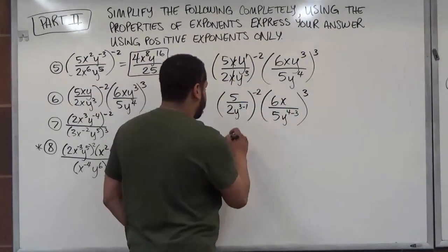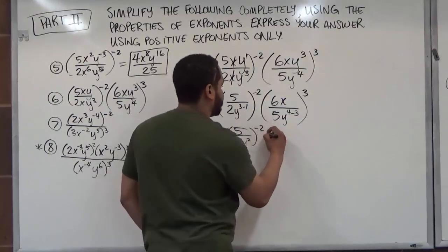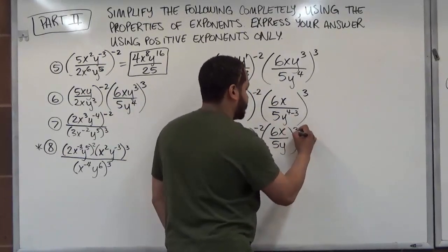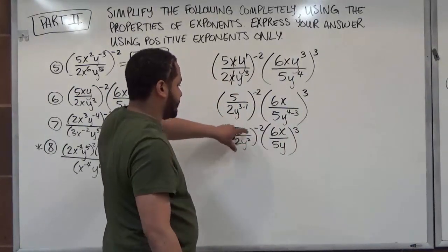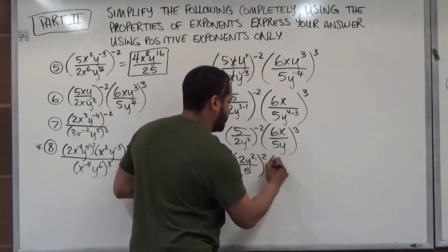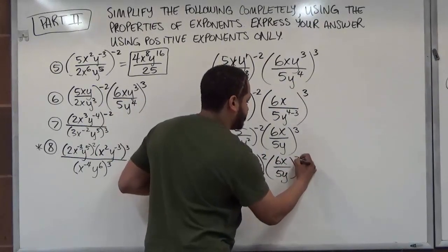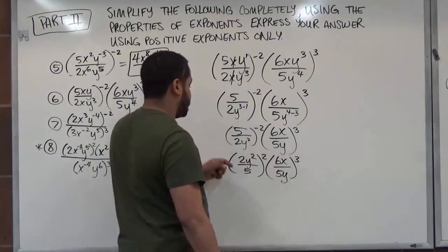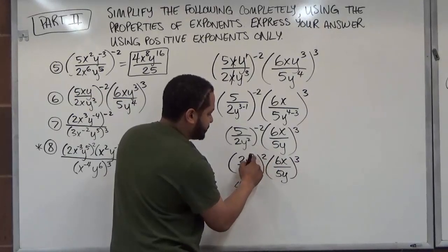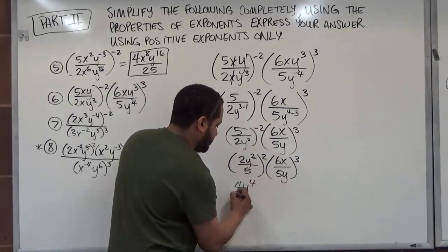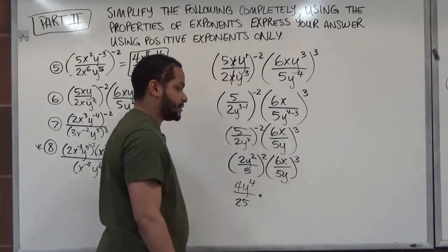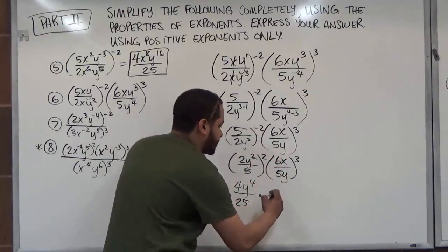Simplifying what we have: 5 over 2y squared raised to the negative second, and 6x over 5y — that's a singular y power — to the third. This first term is going to reciprocate, so we get 2y squared over 5 to the second power, and 6x over 5y to the third power. Now applying the exponent properties: 2 to the second power is 4, y squared times 2 gives y to the fourth, and 5 squared is 25. For the second term: 6 to the third power is 216 — practice with a calculator to get these down.